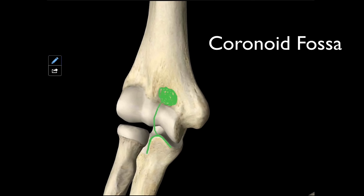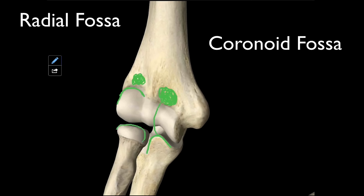Lateral to the coronoid fossa, we're going to have another little ditch — another little fossa — that we call the radial fossa, and that's right above the capitulum. The reason we call it the radial fossa is because right here you have the head of the radius. When you go into elbow flexion, the head of the radius is going to go around the capitulum, and there's this groove for it right there that's called the radial fossa.